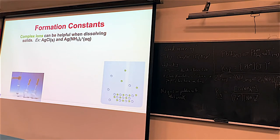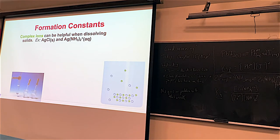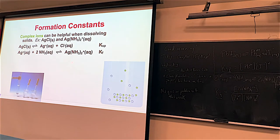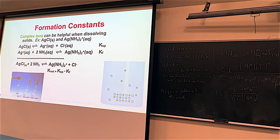Complex ions confused chemists for a long time because they'd make a solid and expect more, but suddenly the solid disappeared. Now that it's understood, you can make insoluble compounds dissolve. Here's a silver chloride example: AgCl is pretty insoluble but does break up into silver and chloride ions. There's also a complex ion where silver reacts with ammonia. Silver ion appears in both reactions — as a product in the KSP and as a reactant in the KF — so you can combine them and find the net K.